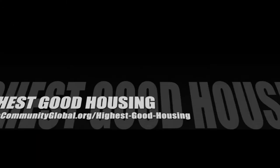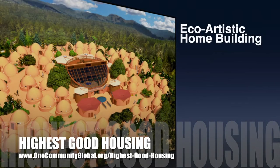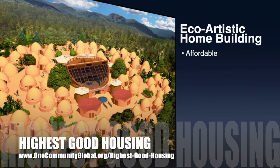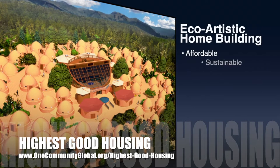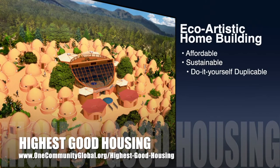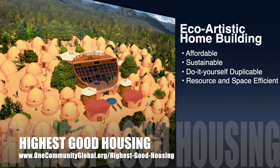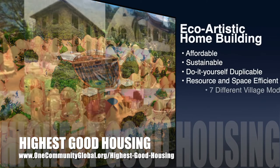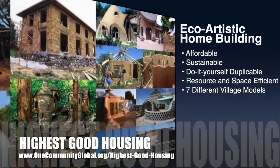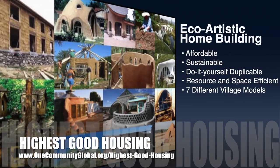The One Community approach to highest good housing is eco-artistic home building that is affordable, sustainable, do-it-yourself duplicable, resource and space efficient, and consists of seven different sustainably constructed village models.